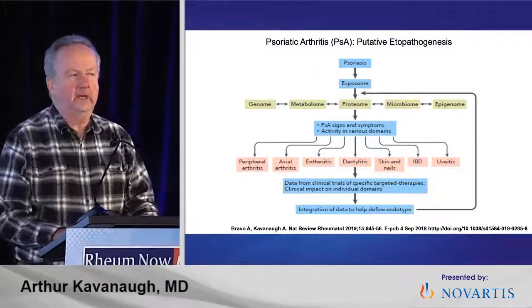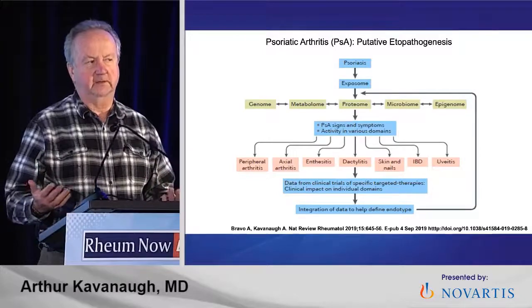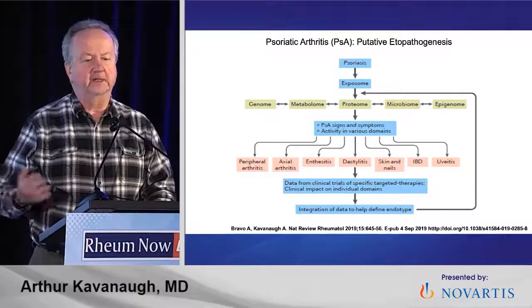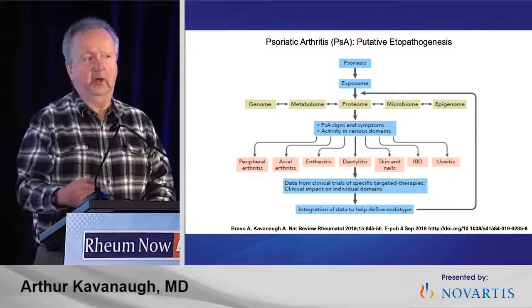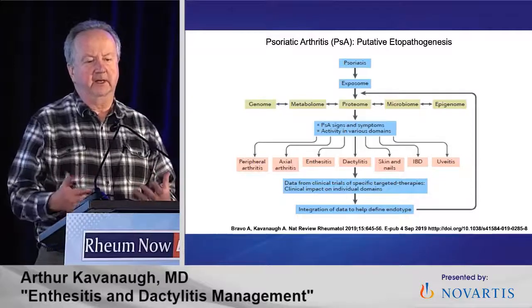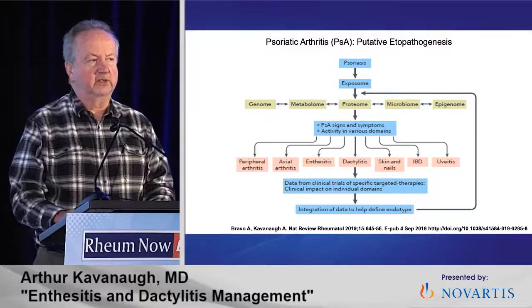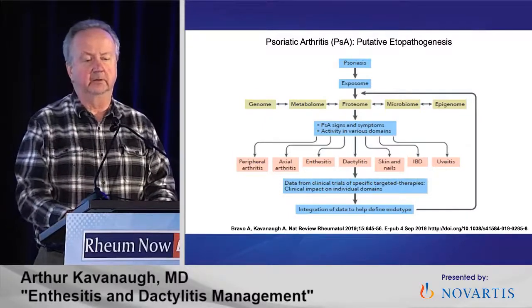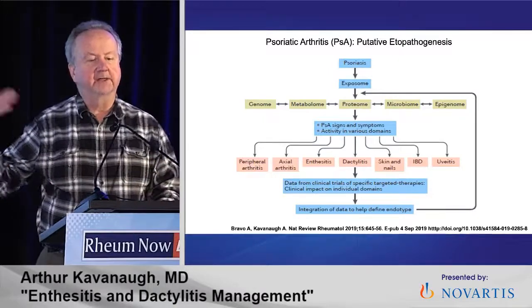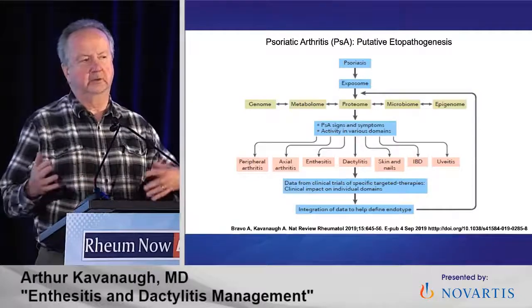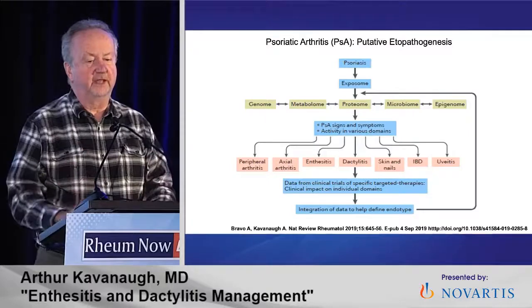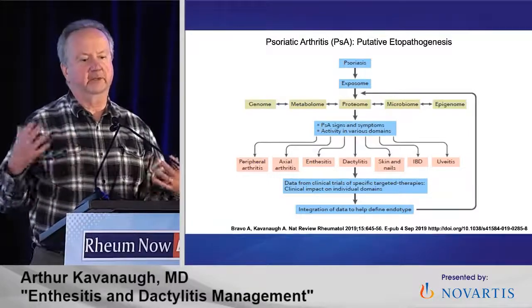Where do we get to dactylitis and enthesitis? It's one of the aspects of disease that fits with both spondyloarthritis and psoriatic arthritis. The answer is we don't know. We don't know how people in psoriatic arthritis — 80% of people start with psoriasis — develop these features. Something happens; some exposure is translated into alterations in genomics and metabolomics, probably relating to epigenetic changes, influence of the microbiome. That gives us the signs and symptoms of disease, which vary from person to person. You see dactylitis and enthesitis in the middle.